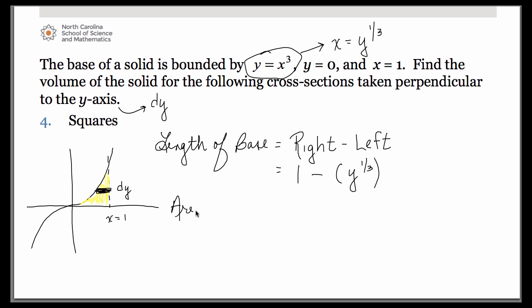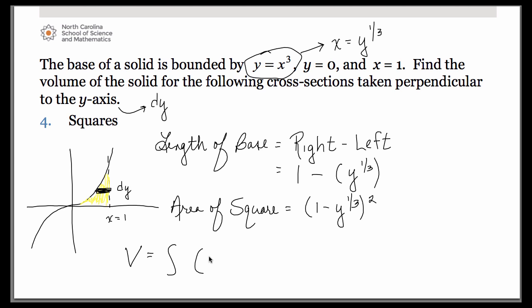The area of our square cross section: imagine that rectangle being the base of your square, with the square rising up towards you. The area is simply that base quantity squared. Our volume is going to be the integral of the area. Our limits of integration now have to be y values — lower limit is 0, upper limit is 1. Evaluate that by hand by finding the antiderivative or on your calculator. You should get that it rounds to 0.1.